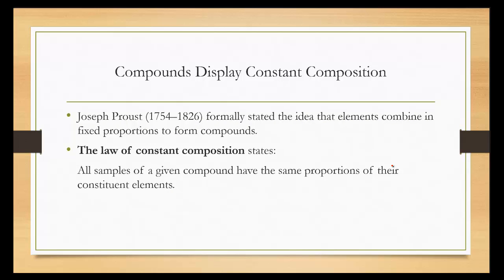Joseph Proust formally stated that elements combine in fixed proportions to form compounds. He called this the law of constant composition, and it states that all samples of a given compound have the same proportions of their constituent elements.